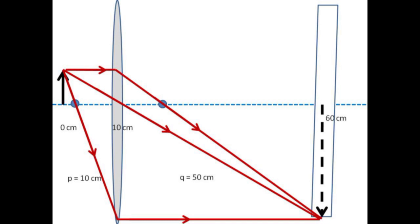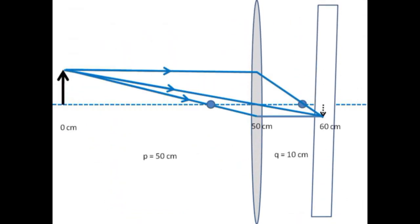As an example, here we show an object distance of 10 cm and an image distance of 50 cm. By moving the lens alone, we see that an image will also form with an object distance of 50 cm and the image distance of only 10 cm.